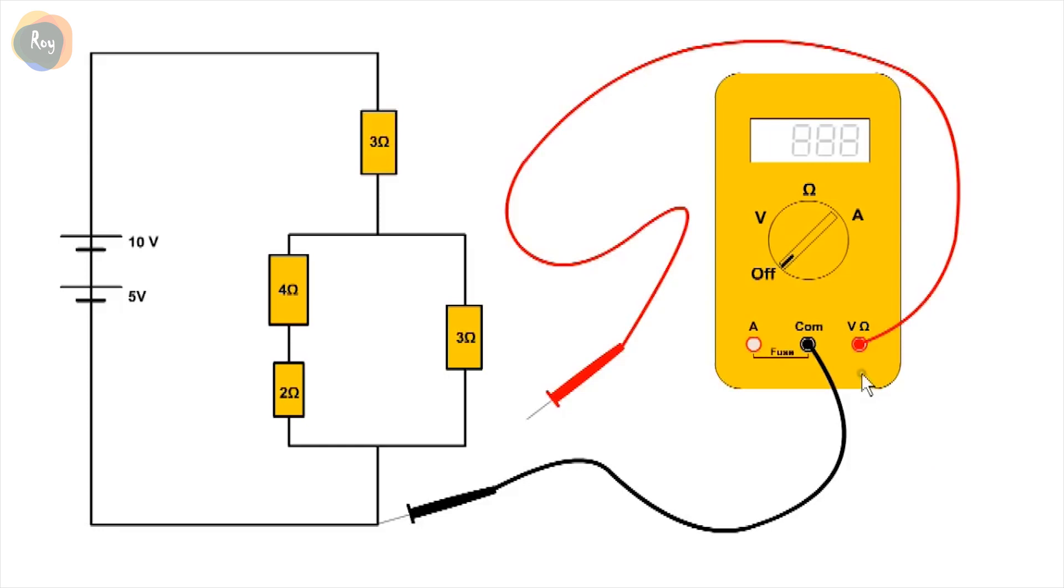A multimeter allows current, voltage and resistance to be measured with one instrument. When voltage is selected, we measure 5 volts and 15 volts. For the purpose of the demo, we assume the conductor has no insulation. The voltage at this point is reduced to 6 volts due to the voltage dropped across the resistor and further reduced to 2 volts at this point.